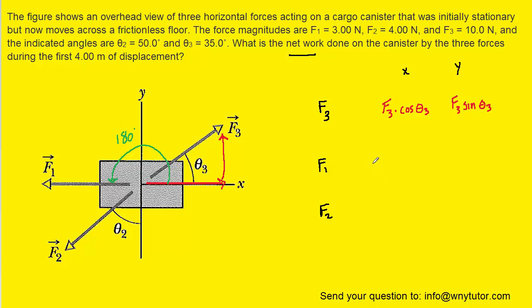So when it comes time to filling in the X component, we would have F1 multiplied by the cosine of 180 degrees. And then for the Y component, we would have F1 multiplied by the sine of 180 degrees.